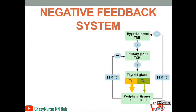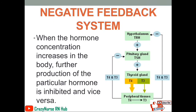Now let's discuss the negative feedback system. When the hormone concentration increases, further production of the hormone is inhibited. Conversely, when the hormone concentration decreases, the rate of production of that hormone increases. That is your negative feedback system.